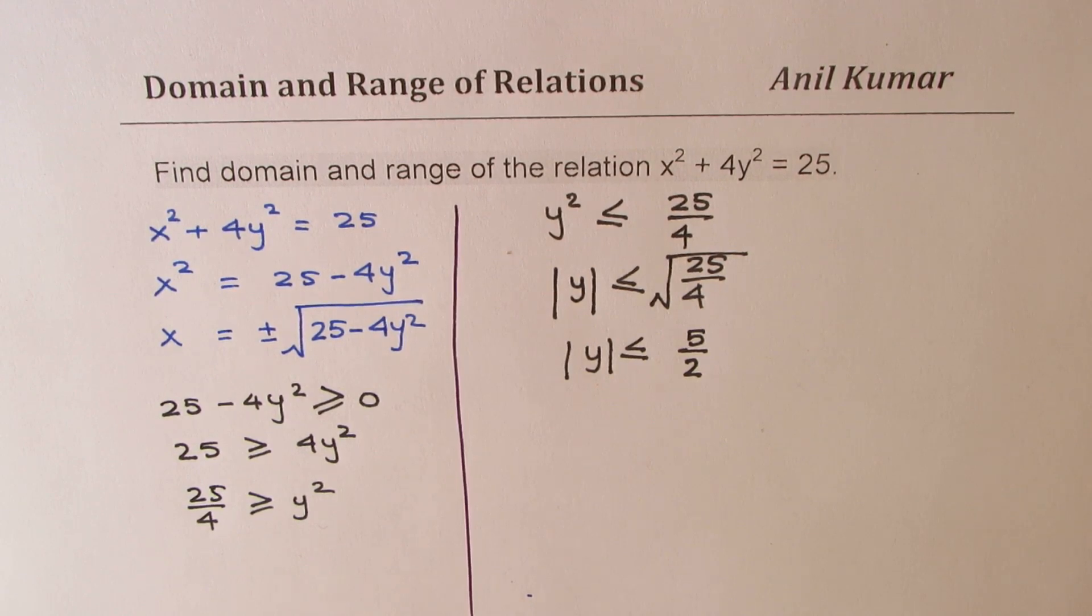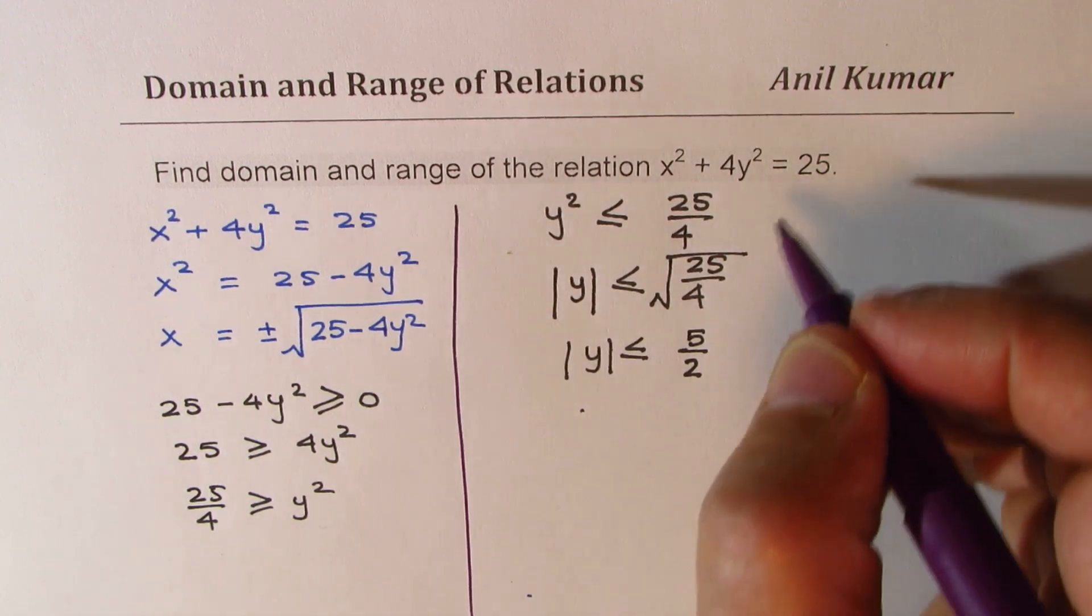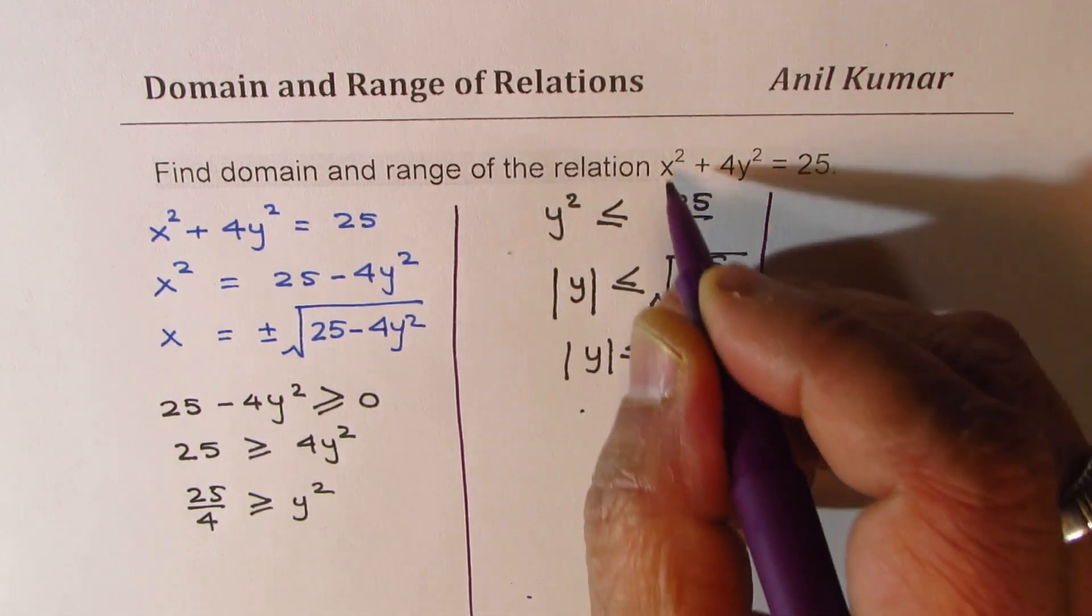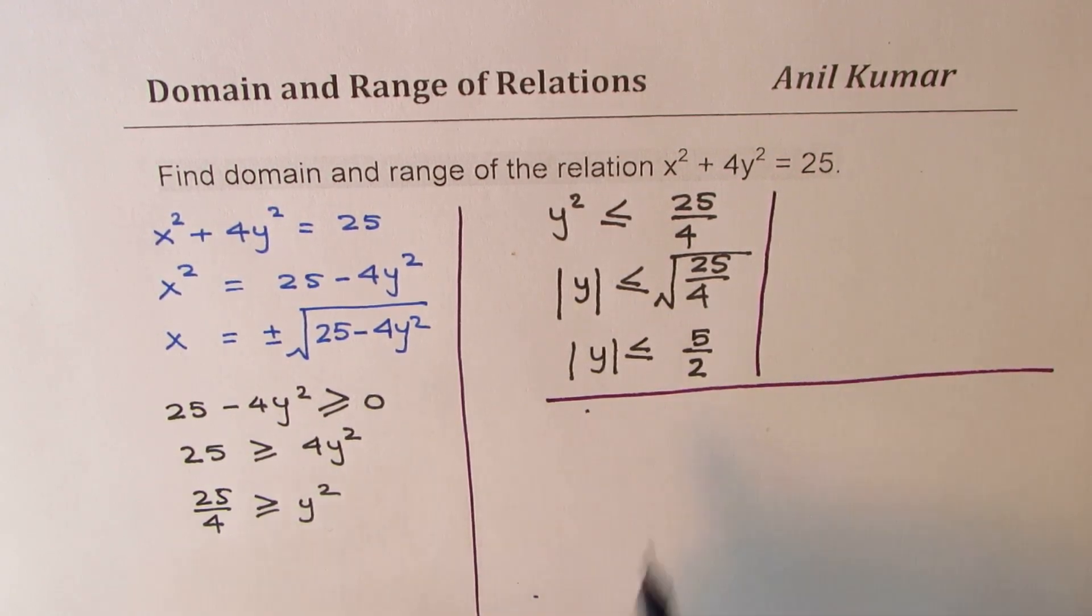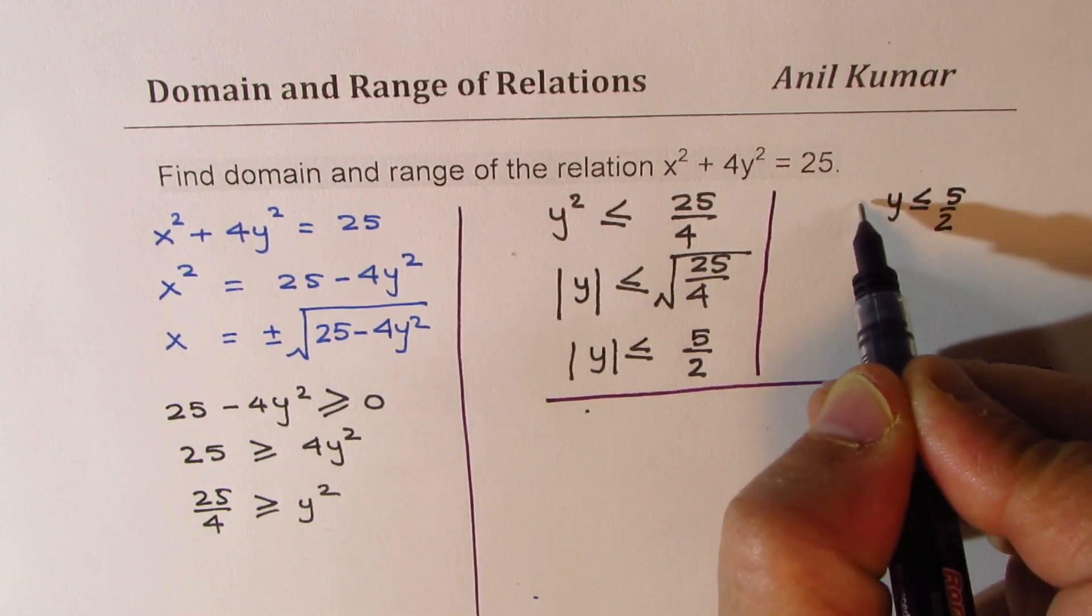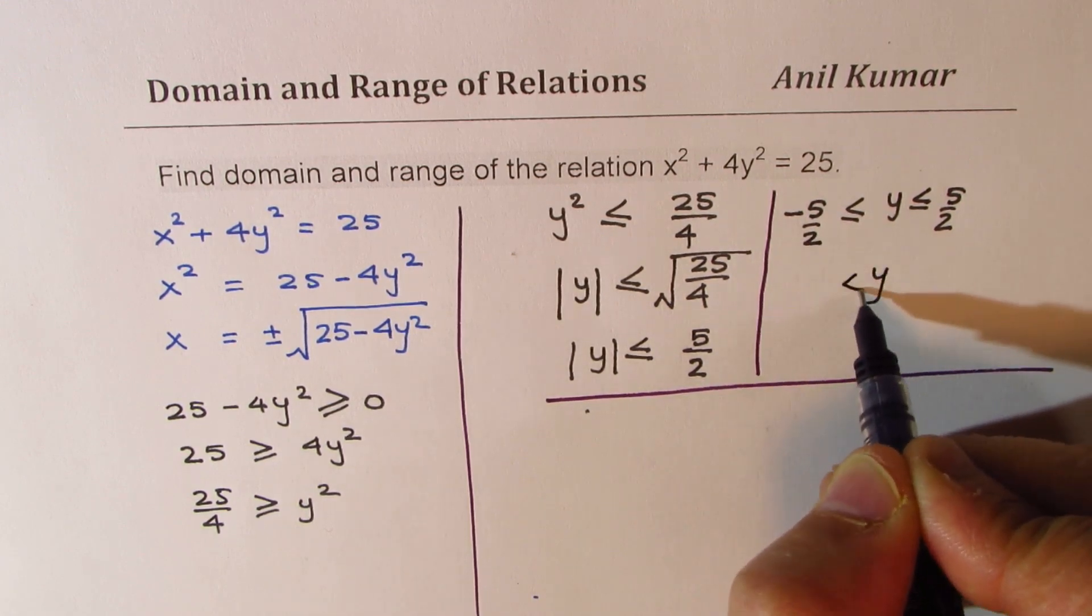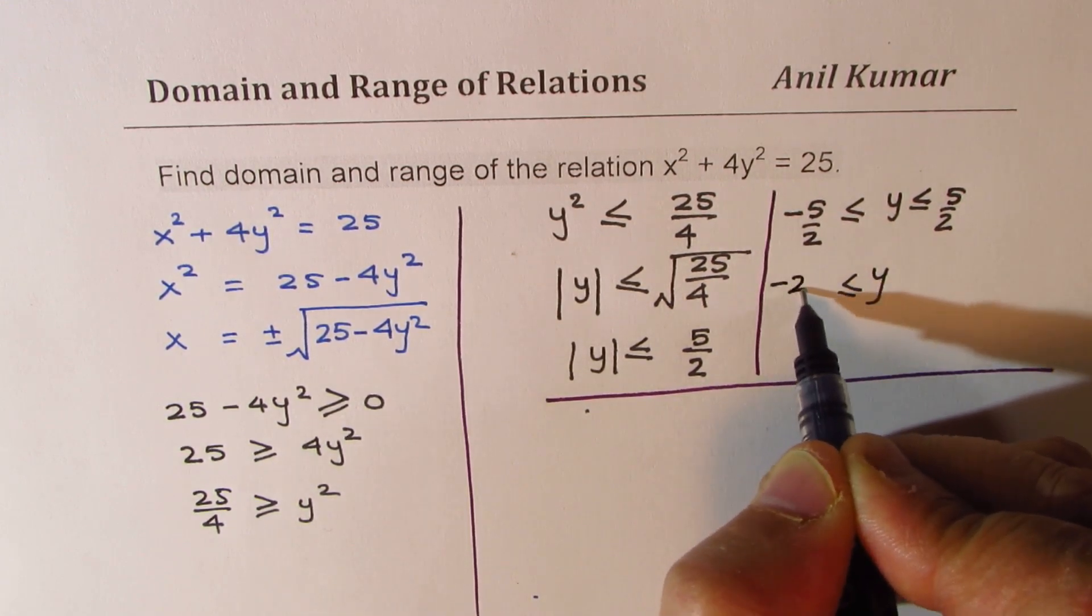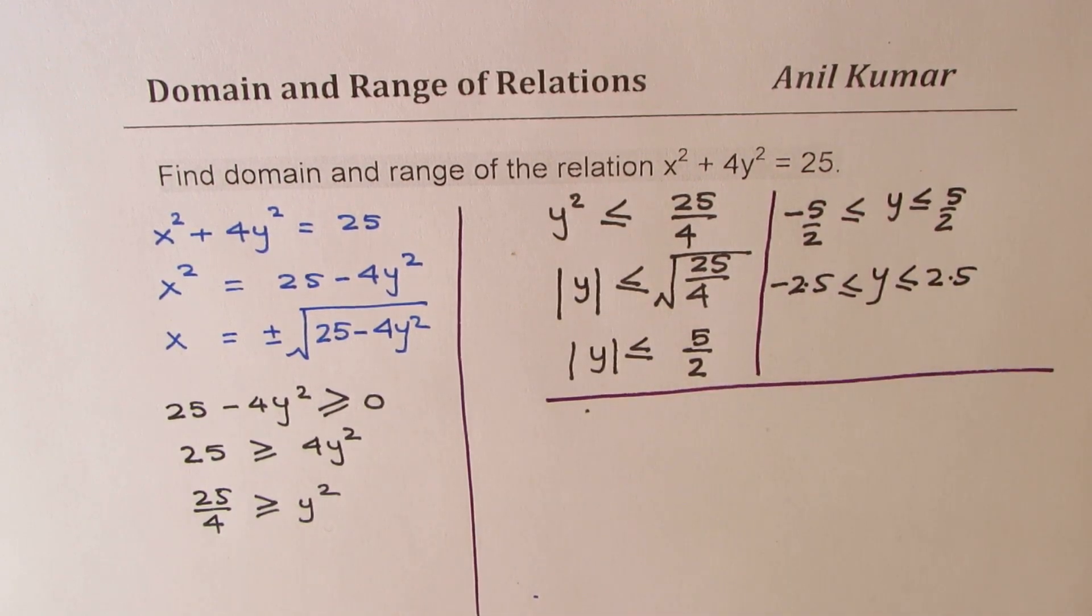And that really means that the value of y is less than or equal to 5/2 but greater than or equal to -5/2. Or the value of y is between -2.5 to 2.5. So that is how we get restriction on y.